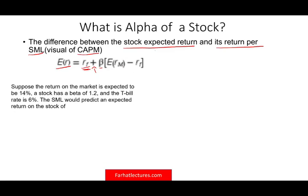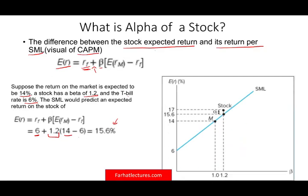Suppose the return on the market is expected to be 14%. We have a stock with a beta of 1.2, and the T-bill rate is 6%, which is the risk-free rate. The SML would predict an expected return as follow. We'll take the risk-free rate of 6% plus beta times 14 minus 6, which is the risk premium, will give us an expected return of 15.6% as per the security market line.